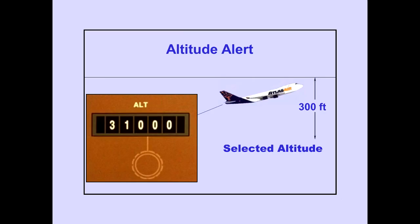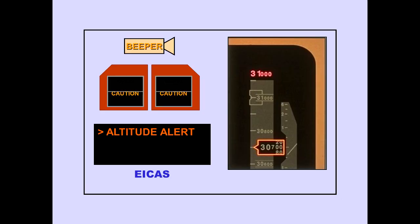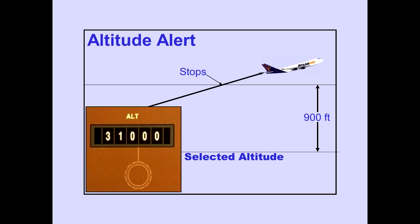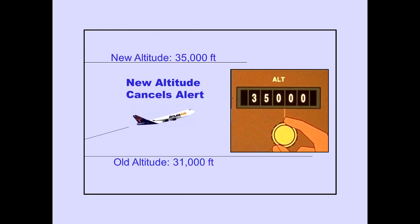Altitude alerting is activated when the airplane deviates 300 feet from the selected altitude. The ICAS caution message altitude alert indicates a deviation from the selected altitude, and the current altitude box also changes to amber. Altitude deviation alerting stops if the airplane is returned to within 300 feet of the selected altitude. Deviation alerting also stops when the airplane is flown more than 900 feet away from the selected altitude, at which time the altitude alert system resets.